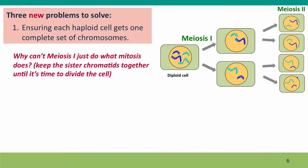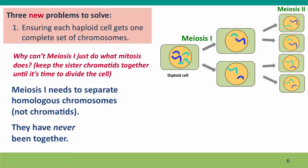You might be wondering why meiosis can't do what mitosis did — it works for mitosis. What if meiosis just keeps the sister chromatids together until it's time to divide the cell? That works great for mitosis. But that won't work for meiosis because what meiosis 1 needs to separate isn't sister chromatids — it's homologous chromosomes. So one set of homologous chromosomes goes into one cell, and the other homologous chromosome — same length, same shape — goes into the other cell. It's not separating sister chromatids; they're staying together.